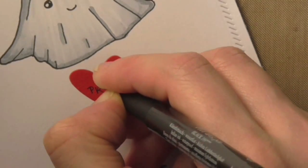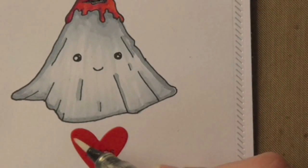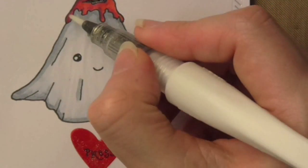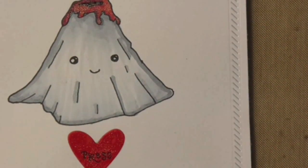To finish off the card, I wrote the word press on the love heart and then added a little glimmer and shine using the Wink of Stella clear glitter brush marker. I think this gives a really pretty finishing touch to the card.